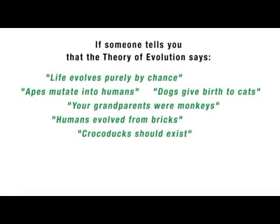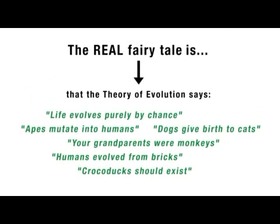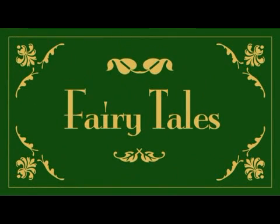If someone tells you that the theory of evolution says any of the following, then they either simply misunderstand it, or they're deliberately misrepresenting it and trying to create confusion about science, in the hope that this will lead to more support for their position. Either way, attempts to make evolution seem like a fairy tale, by both the misinformed and the dishonest, will continue to be exposed. The real fairy tale is the claim that evolution has anything to do with dogs giving birth to cats, individual animals morphing into other species, or popping into existence through pure accident. If you speak to anyone who knows about and accepts evolution, you'll find that these ideas are as ridiculous to them as they are to the anti-evolutionist.